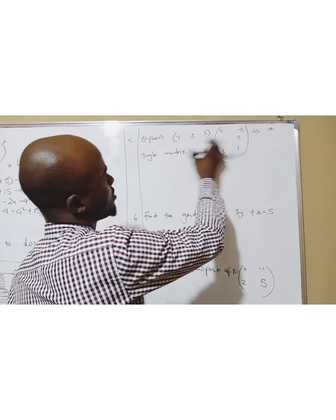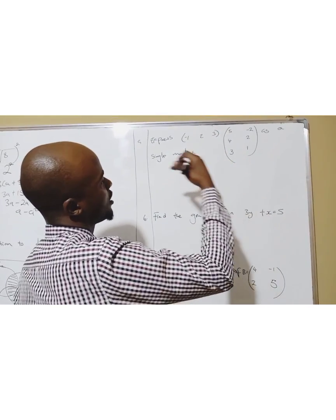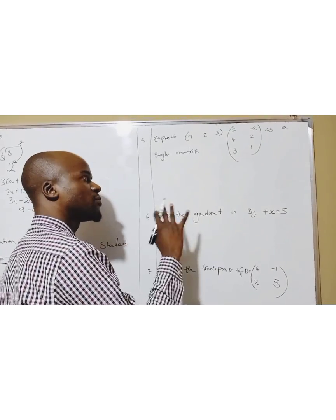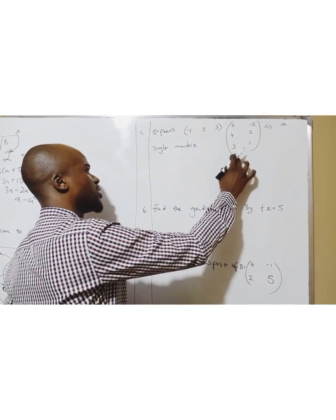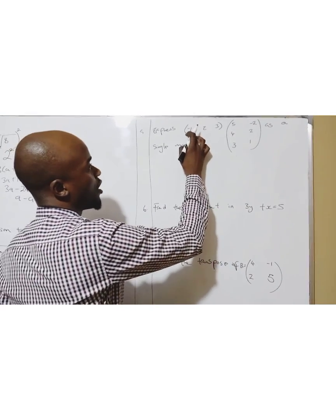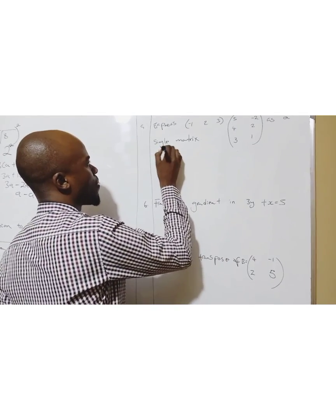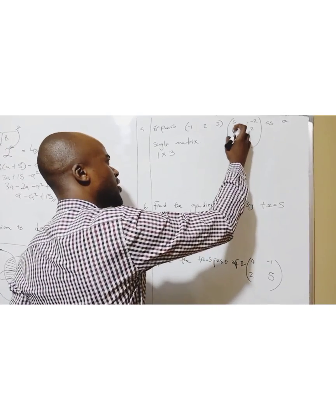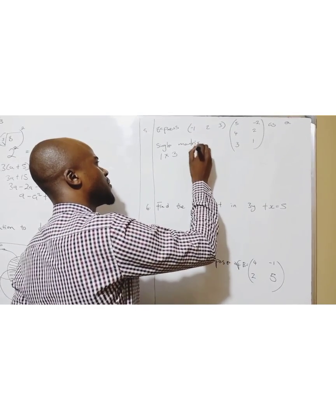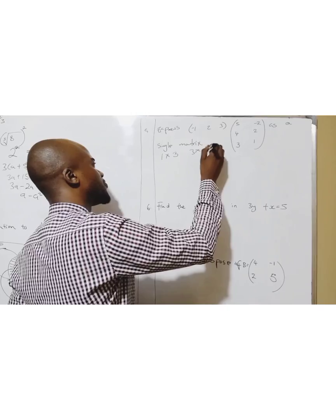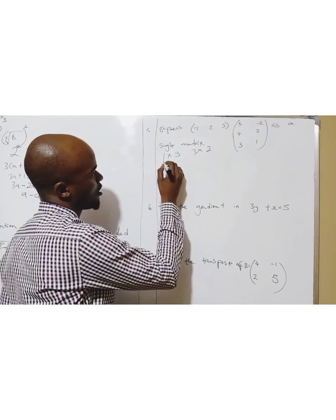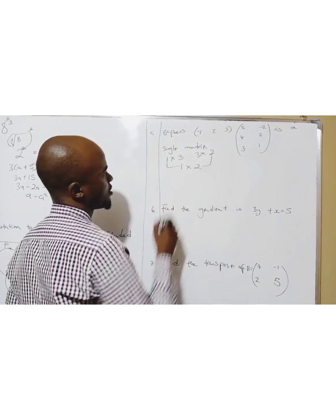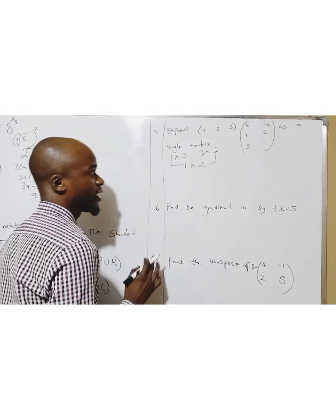Express these matrices as a single matrix. Before you multiply matrices with different orders, you have to find the order. How many rows are here? One row. How many columns? Three. How many rows here? Three. How many columns? Two. So if I multiply this matrix, I'll have one row and two columns.